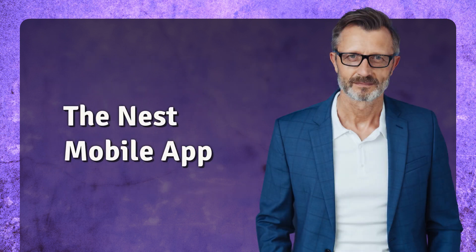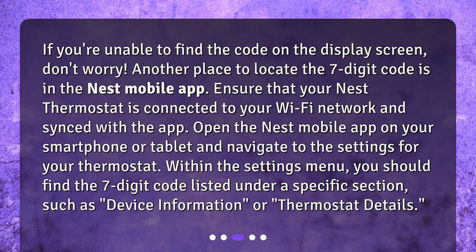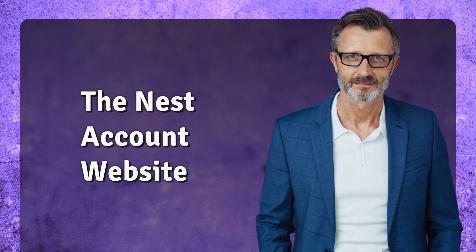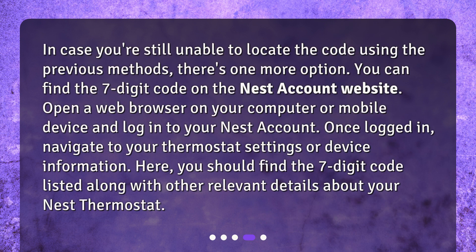If you're unable to find the code on the display screen, don't worry. Another place to locate the seven digit code is in the Nest mobile app. Ensure that your Nest thermostat is connected to your Wi-Fi network and synced with the app. Open the Nest mobile app on your smartphone or tablet and navigate to the settings for your thermostat. Within the settings menu, you should find the seven digit code listed under a section such as device information or thermostat details.